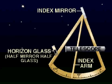A sextant is an optical instrument used in navigation to determine the elevation of the sun or other celestial bodies. The telescope, index mirror, and horizon glass comprise an optical system that superimposes the two objects being measured.